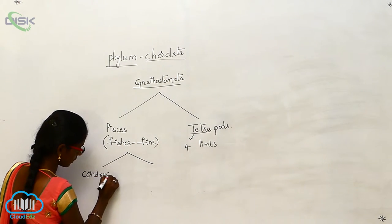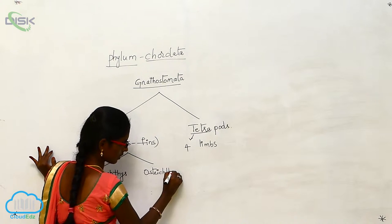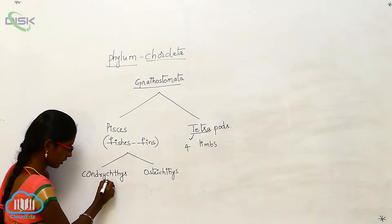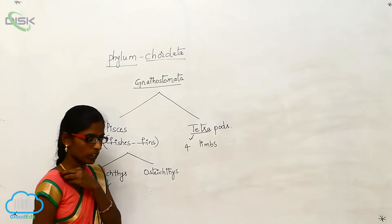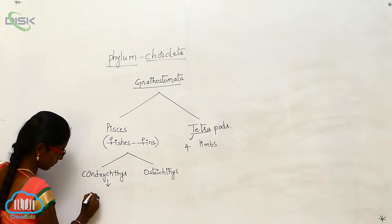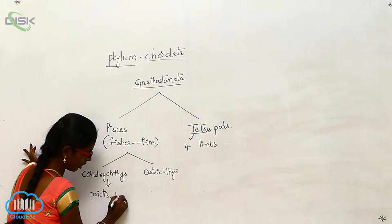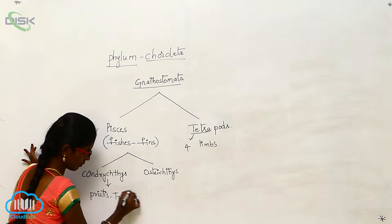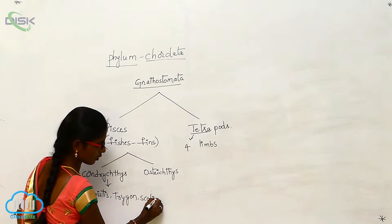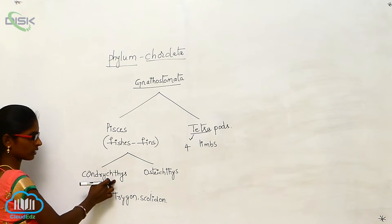Fishes are divided into two types: Chondrichthyes and Osteichthyes. Chondrichthyes examples include Pristis, Trigon, and Scoliodon.